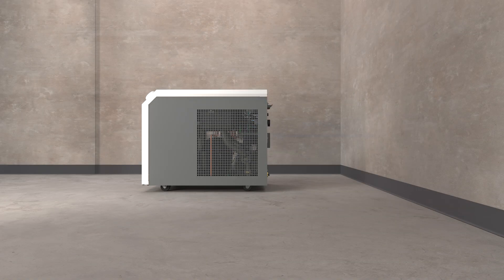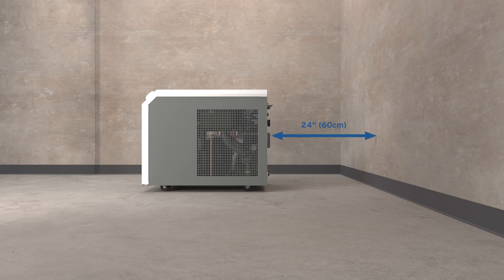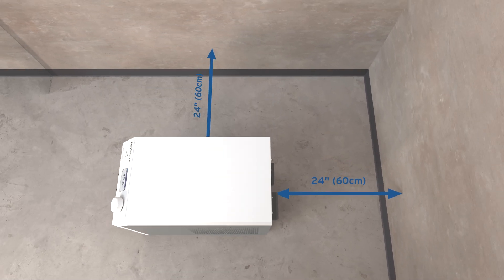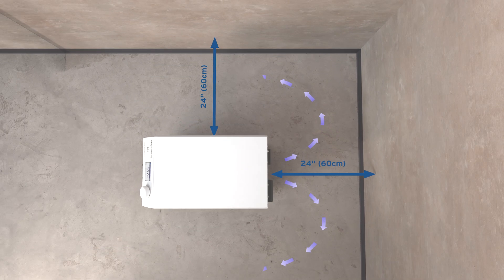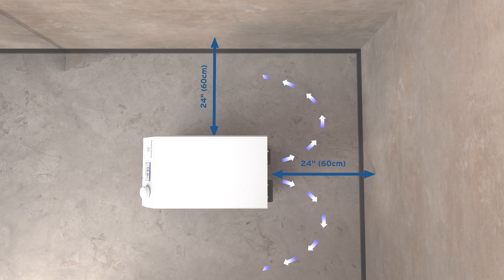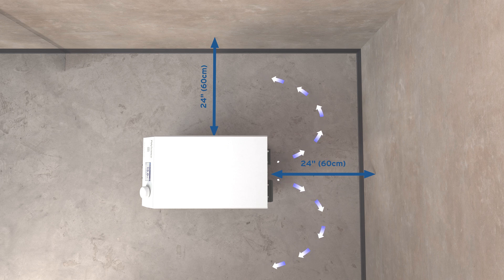Be sure that there is at least 24 inches or 60 centimeters of space on all sides of the chiller to ensure good airflow. The chiller needs good airflow to ensure proper cooling.